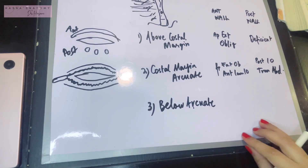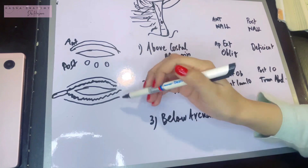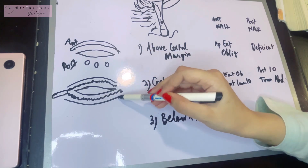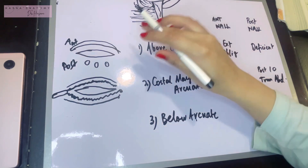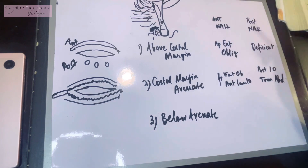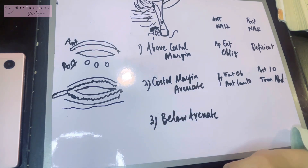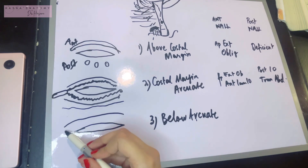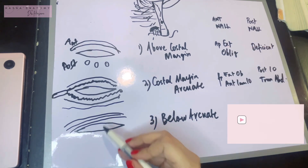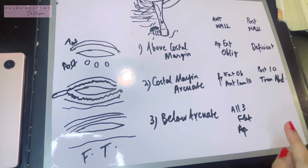The arcuate line is a crescentic line marking the point where the posterior wall of the rectus sheath ends. Below the arcuate line, the internal oblique no longer has a posterior lamina, and the transversus abdominis aponeurosis also shifts to the anterior side. This means all three aponeuroses form the anterior wall, while posteriorly the wall is deficient — the rectus abdominis lies directly on the fascia transversalis.